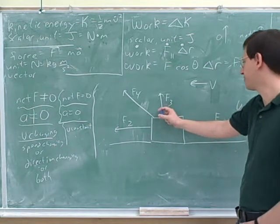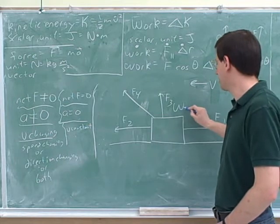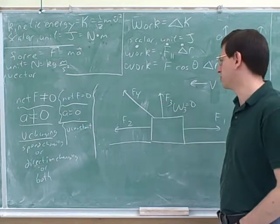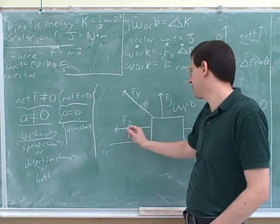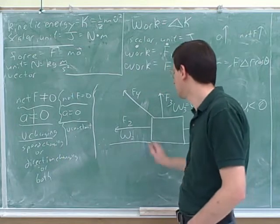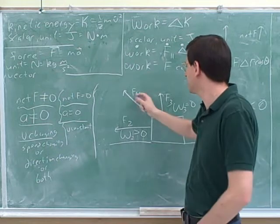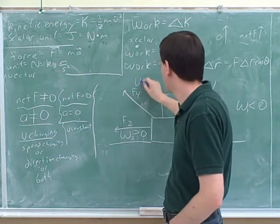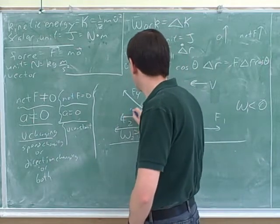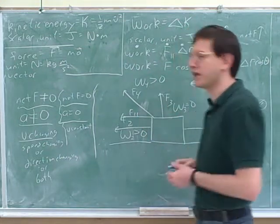What could you say about the work done by F3? It is doing no work — zero — because it's perpendicular to v, so it's not doing any work. What about the work done by F2? Positive work, because it's in the same direction as the velocity, speeding the object up. And what about F4? Also positive work, because it has a component — F parallel — that is speeding the object up.